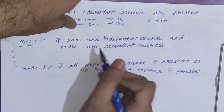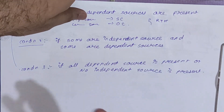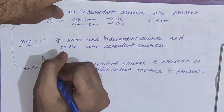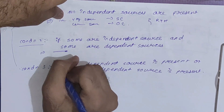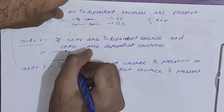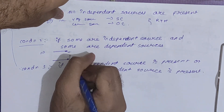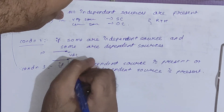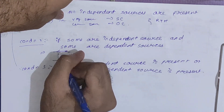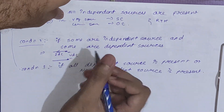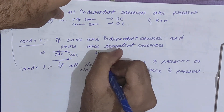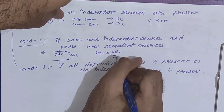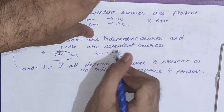For condition 2, where you find some independent source and some dependent source, you have to assume a Vdc voltage across the two terminals, and the current flowing through this Vdc as Idc. Your Rth will simply be Vdc divided by Idc.